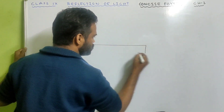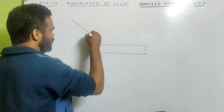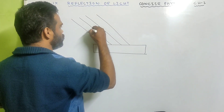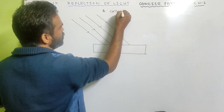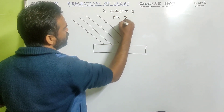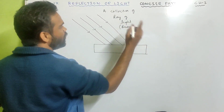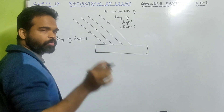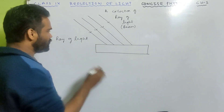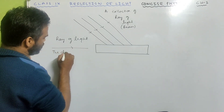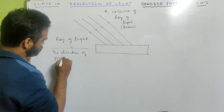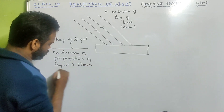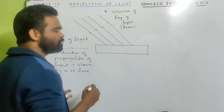Now look carefully. Suppose this is a surface and a beam of light is travelling in this medium. What is a beam of light? A collection of rays of light is known as a beam of light. And what is a ray of light? The light moves in a particular direction. The direction of the propagation of light is shown by a straight line, and that is known as a ray of light.